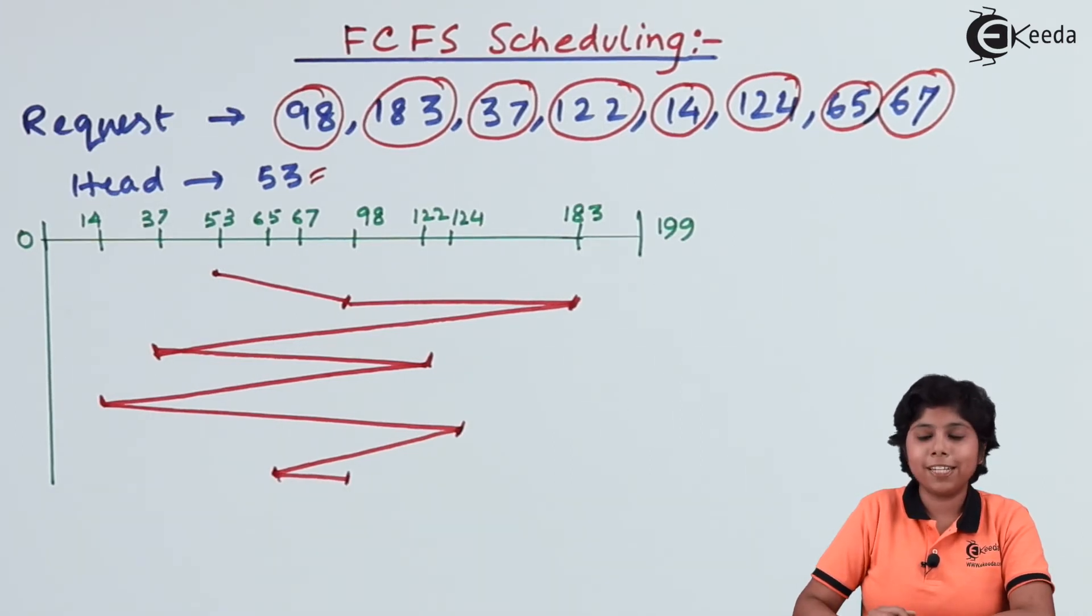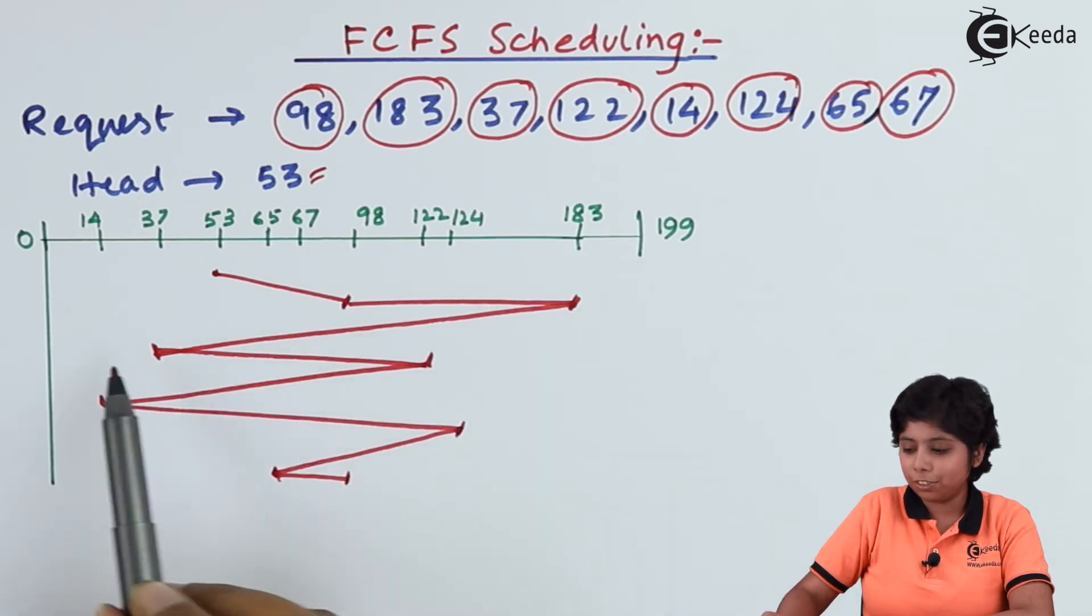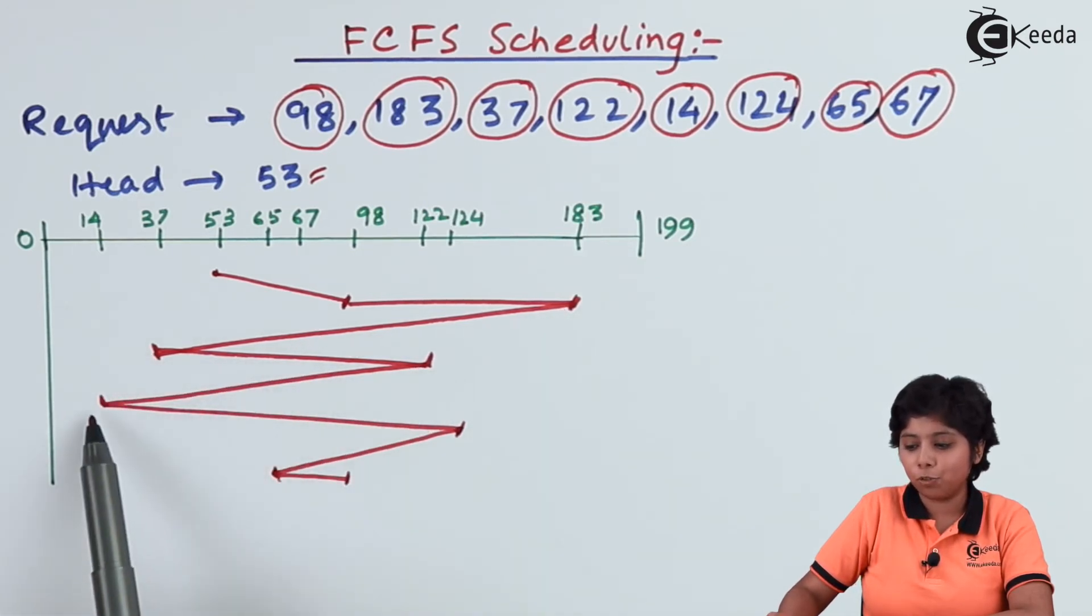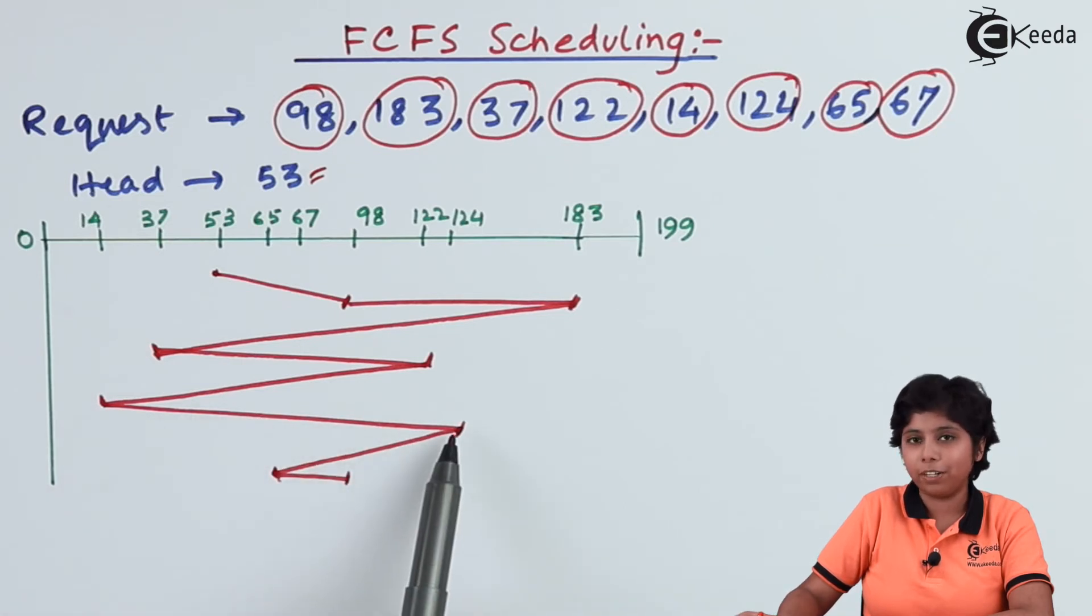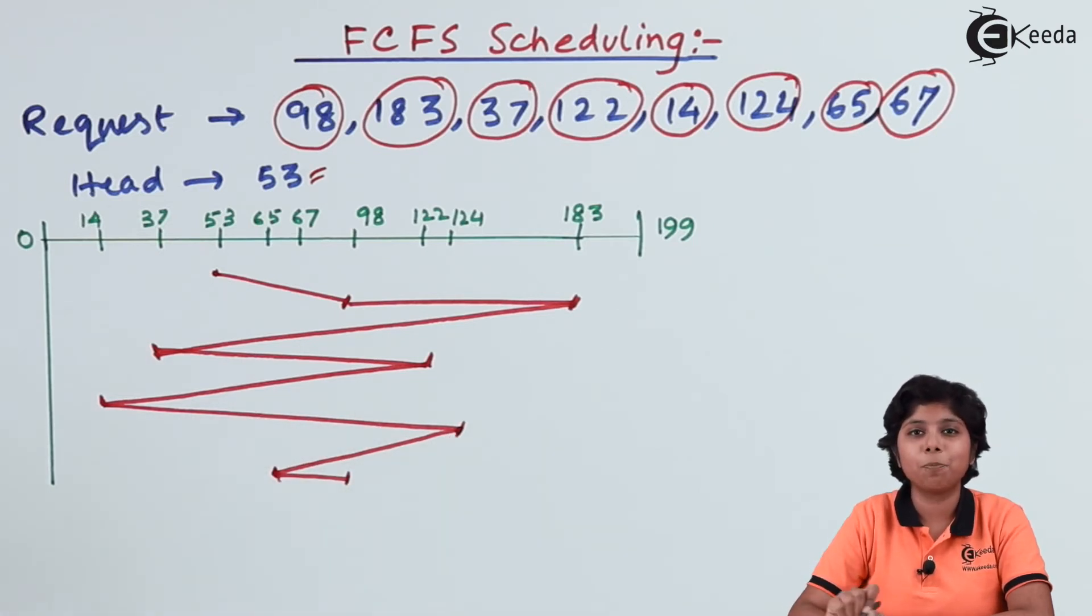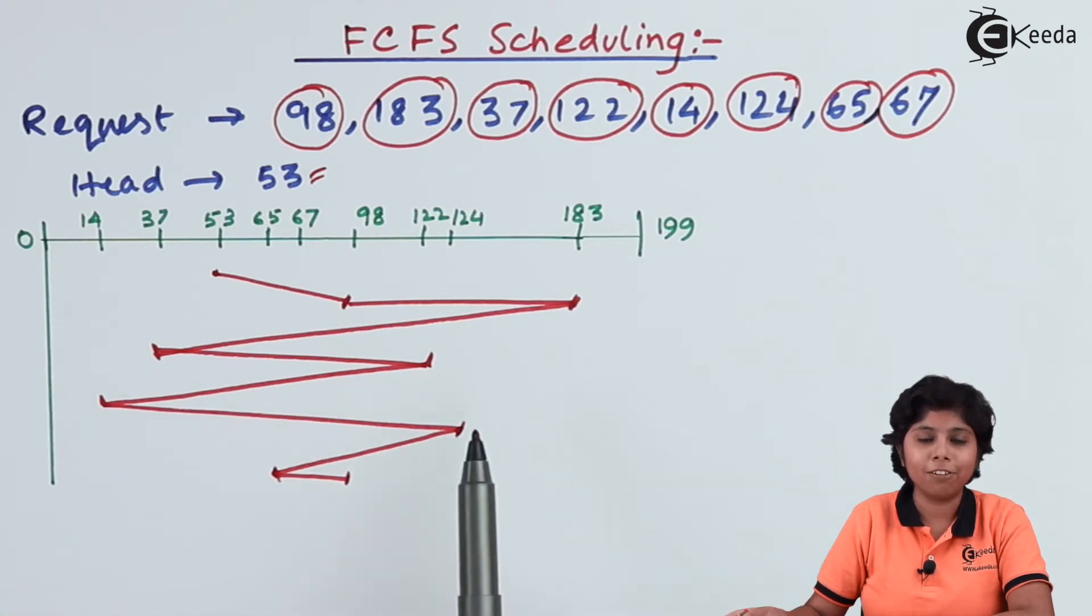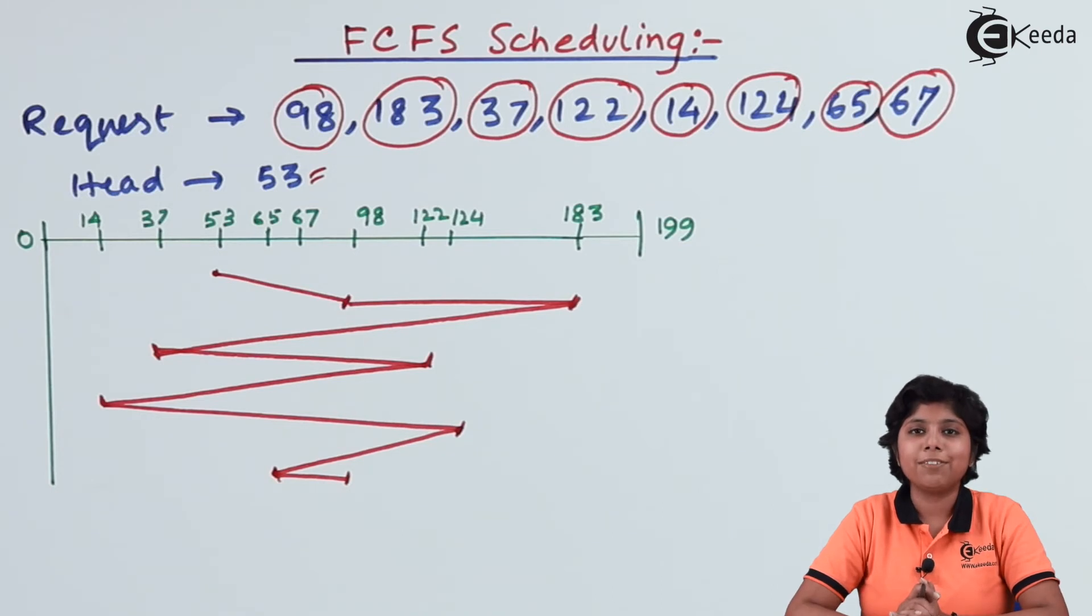Now as you can see, the wild swing from 183 to 37, then 122 to 14, again to 124, generally illustrates the problem of this type of algorithm. The total head movement varies highly. It is generally not implemented in disk scheduling because of this problem. Now we will calculate the total head movement for this algorithm.